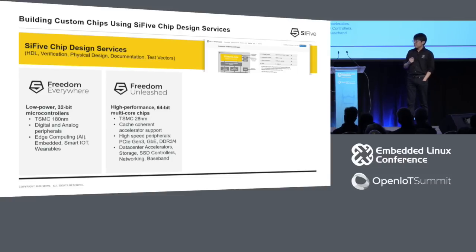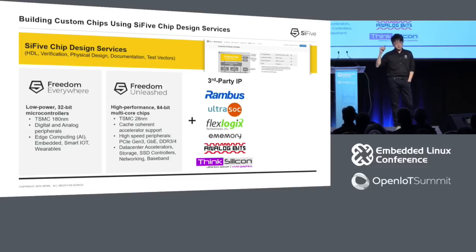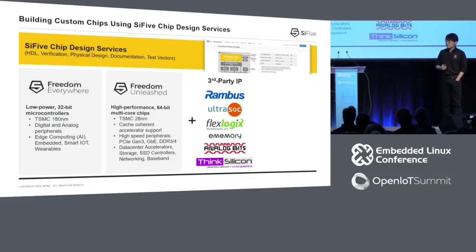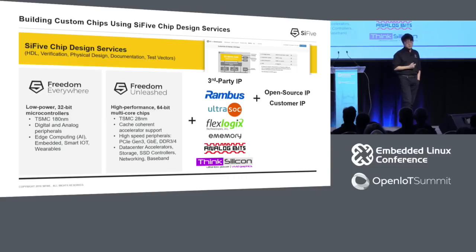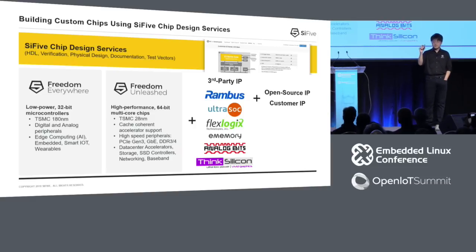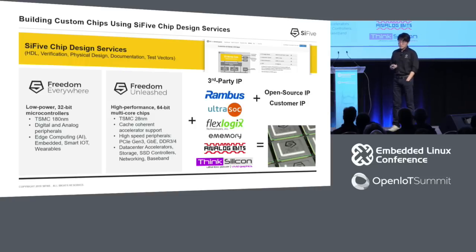I envision that the Freedom Unleashed platform will be good for embedded Linux applications. After you select these templates, you can go to a marketplace where all the third-party IPs have already been onboarded to our project templates. Today we have IPs from Rambus, UltraSoc, FlexLogic, e-memory, AnalogBits, and ThinkSilicon, all already onboarded onto our platform and available on the website. On top of that, you can onboard additional open-source hardware IPs as well as your own customer IP — the value-added piece that you build. Then, a couple of clicks away from the website or API calls away, you get your own custom chip, billions of them, just for your need.